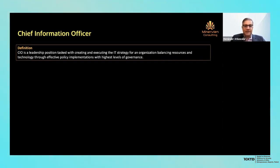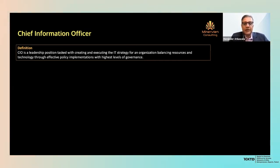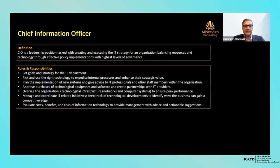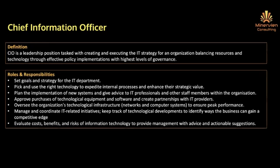The key words here are 'executing the IT strategy.' The IT strategy usually lies with the CIO, because it's the bridge between how IT is going to enable the business to meet its goals and objectives. It's also about balancing resources and technology — CIOs have decision-making rights and technology selection rights — as well as policy and governance, which are two other key pillars built into this specific role.